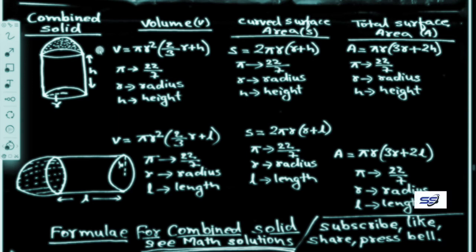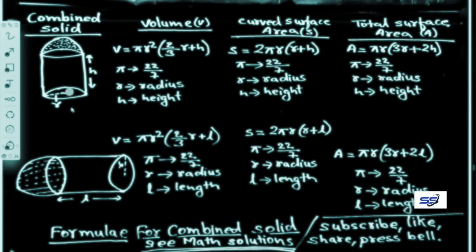In a combined solid figure where a hemisphere and cylinder are joined together, we need to find the volume, curved surface area, and total surface area. The lower part is a cylinder with radius R, and the dotted upper part is a hemisphere. Both are combined to form a single figure, where R is the radius and H or L is the given measurement.